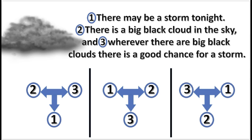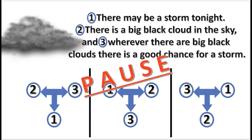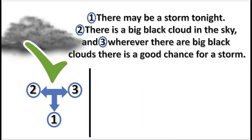Choose the correct sequence of numbers in the argument. Press pause — the answer is in 3, 2, 1. Ding! That is correct. 2 and 3 support 1 conjointly.